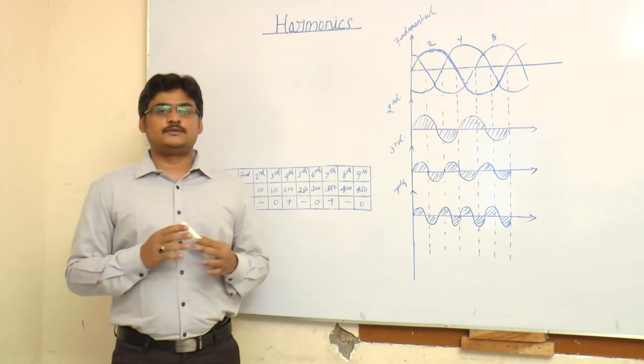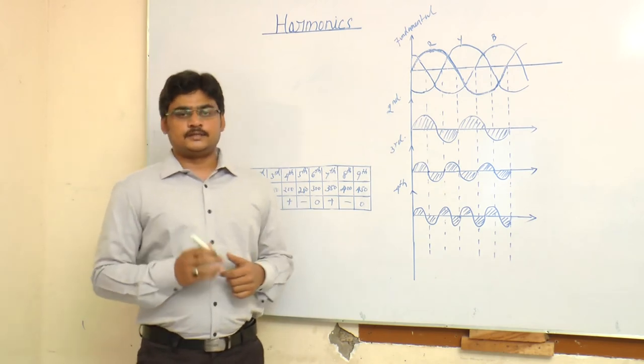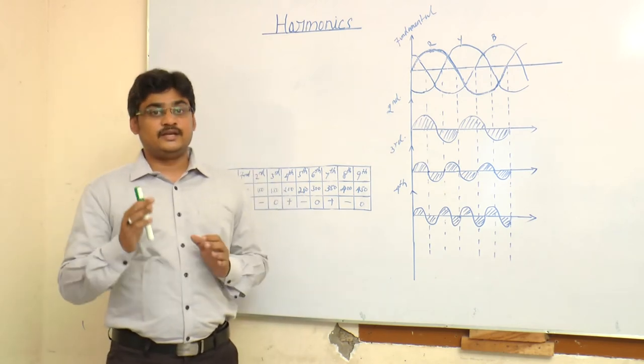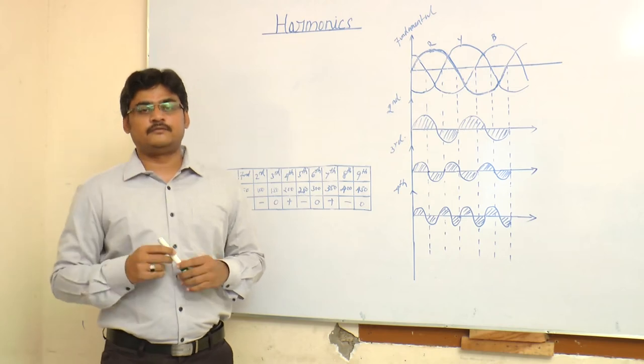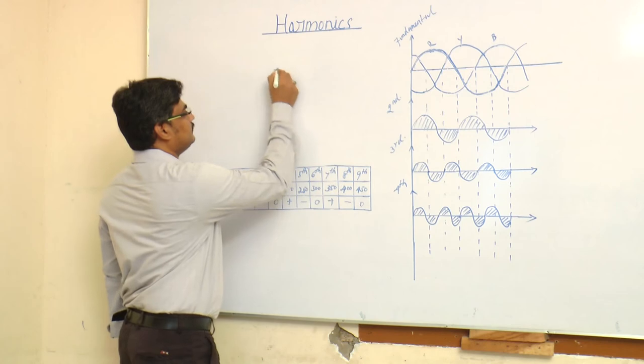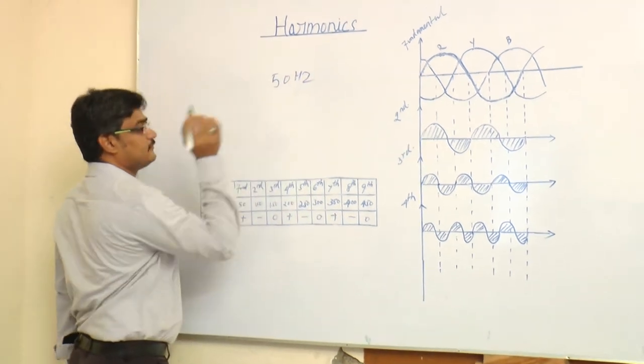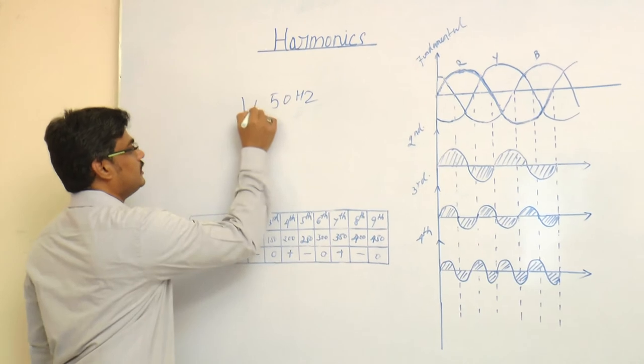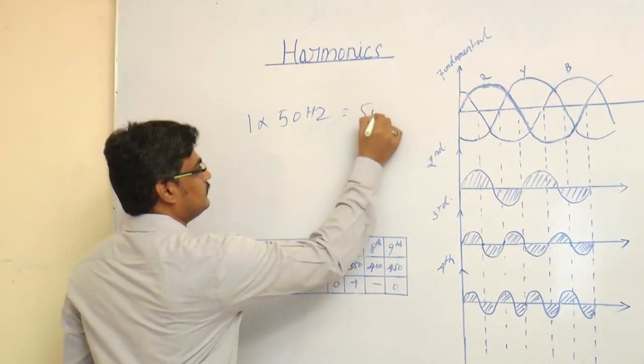Now let us see the orders and sequences of harmonics. Harmonics are integral multiples of fundamental frequency. Consider the fundamental frequency as 50 Hz. For first order harmonics, 1 times 50 is 50 Hz.